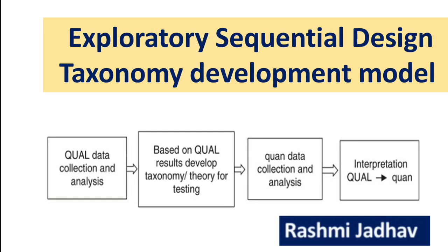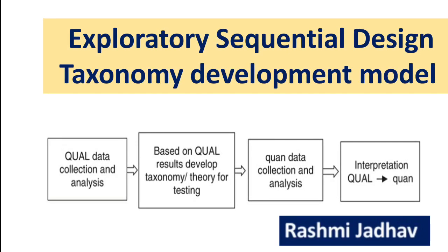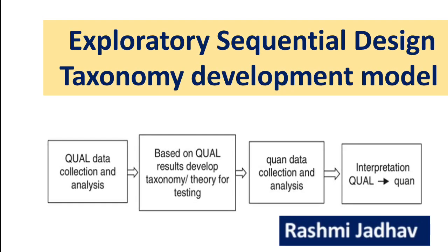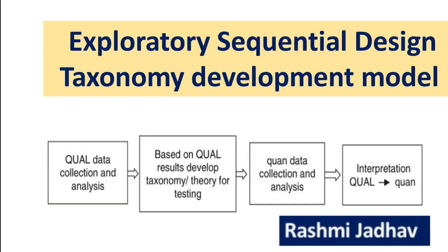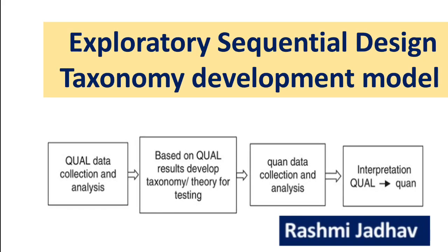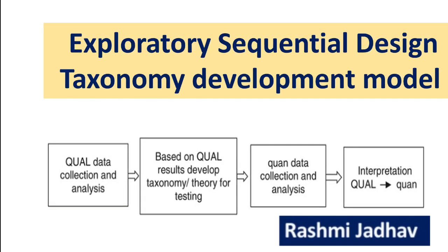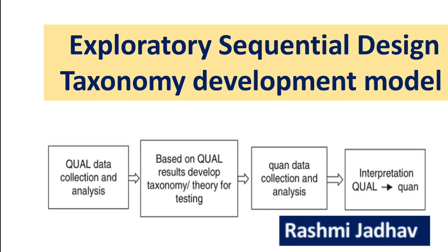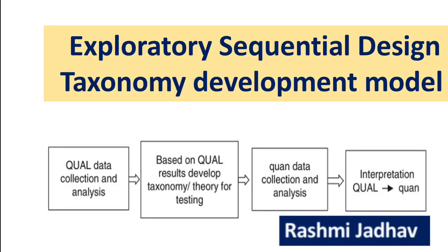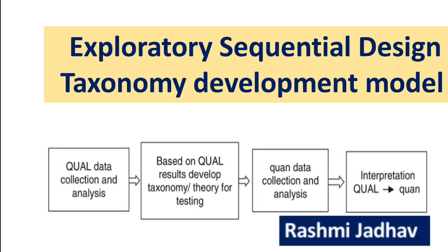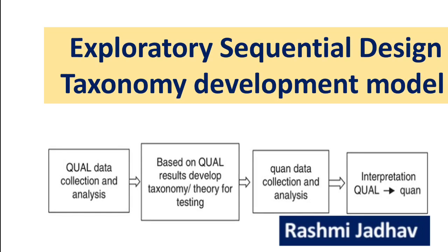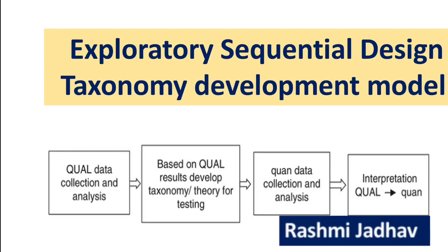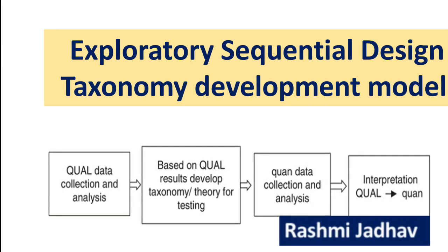The second type is the exploratory sequential taxonomy development model. Taxonomy means the classification of something. If we want to develop a taxonomy or theory, we use this type. First, qualitative data is collected and analyzed; based on that, results are checked and a taxonomy or theory is developed. Then quantitative data is collected to explain the qualitative data, and finally interpretation of the results is done.